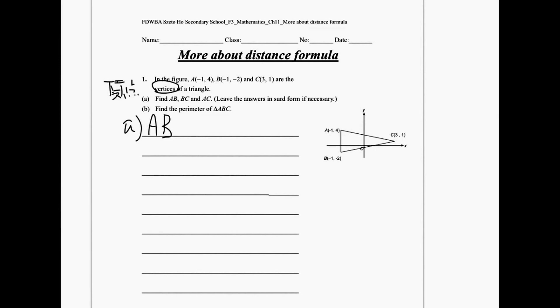Since AB is just a vertical line, we don't have to use distance formula, but simply 4 minus negative 2 equals to 6. And don't forget units.